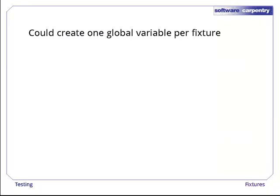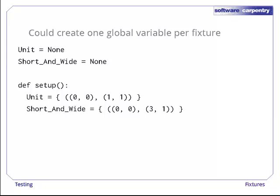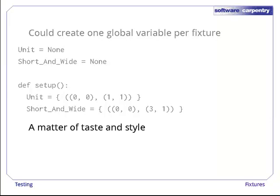We don't have to put all our fixtures in one variable, of course. We could create a bunch of global variables and store one fixture in each. Here's the code to do that. Notice that we have to assign each global variable some value just to create it. Which you use is a matter of personal taste and project style.